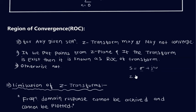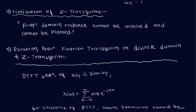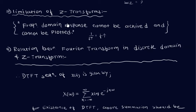The Z-transform concepts make it easy to convert difference equations to algebraic equations, but there is a limitation: the frequency-domain response cannot always be achieved or plotted. Since time is inversely proportional to frequency, if more samples are needed the frequency may be very high, making the time period very small. Closely spaced discrete signals can resemble a continuous-time signal — this is a key limitation of the Z-transform that we will examine through examples.